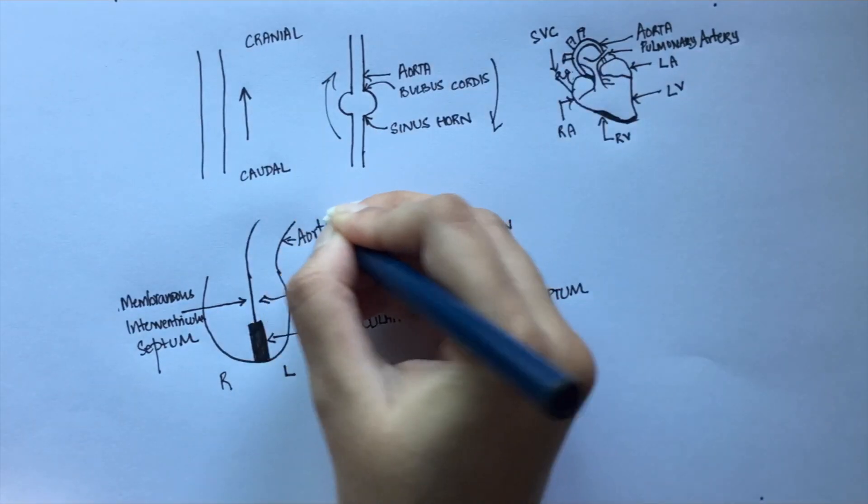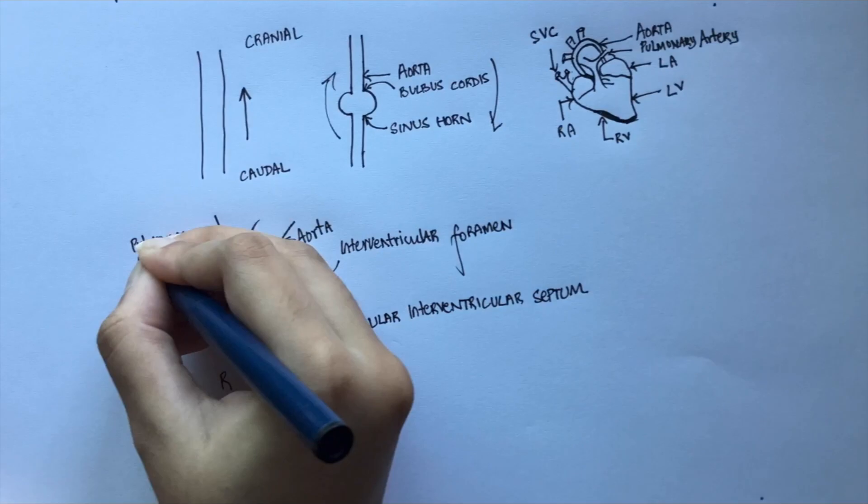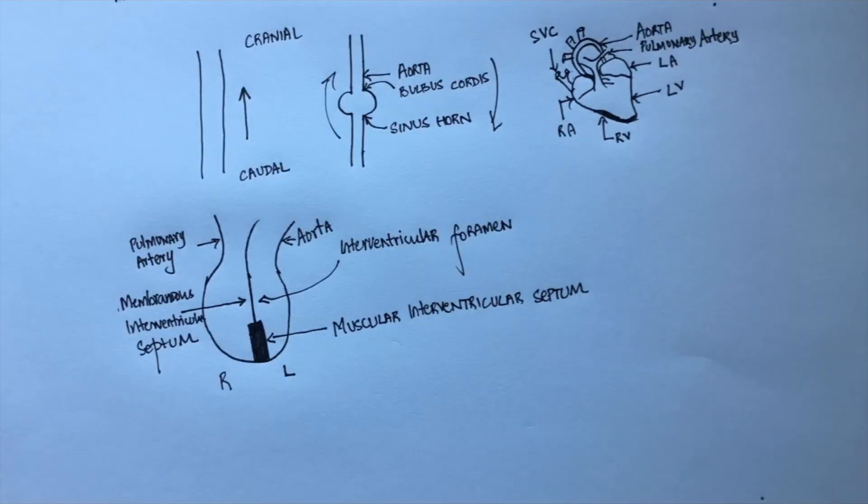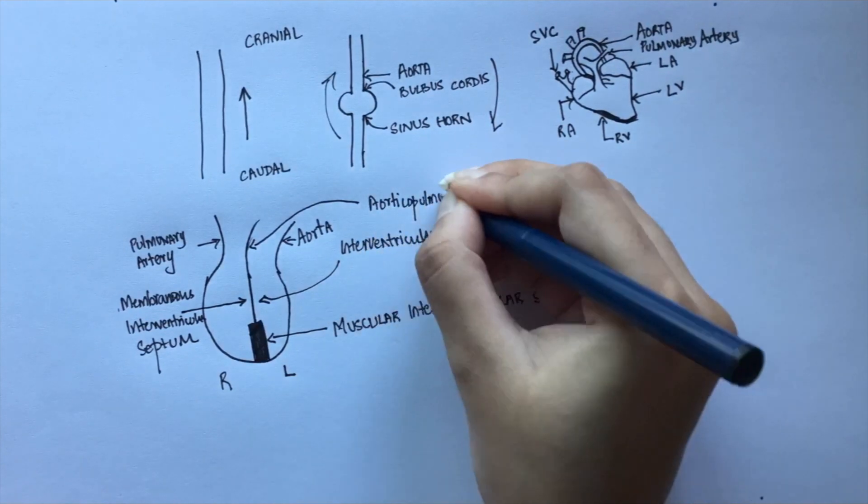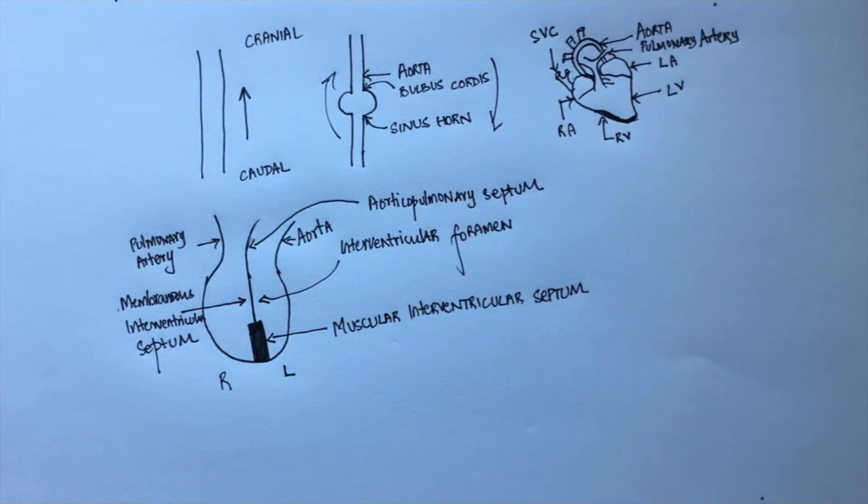These are the arteries that are leaving the heart, the aorta and the pulmonary artery. They are separated by the aorticopulmonary septum.